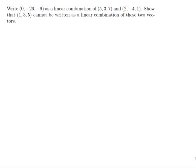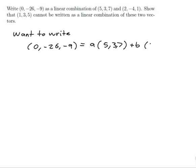Write [0,-26,-9] as a linear combination of [5,3,7] and [2,-4,1]. Show that [1,3,5] cannot be written as a linear combination of these two vectors. In order to do the problem I need to know what linear combination means. A linear combination of some vectors is what you get when you add together multiples of the various vectors. So I want to write [0,-26,-9] as a times [5,3,7] plus b times [2,-4,1].